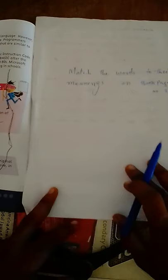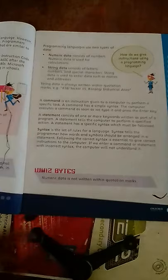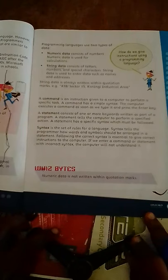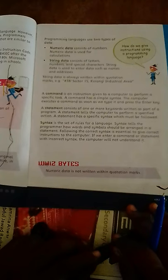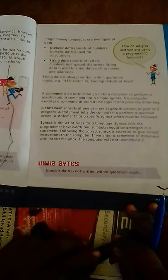Dear students, this is all about the data types. The data types are in your book. In your book, there are two types of data: number one is numeric data, and number two is string data. We have discussed both types of data and we will meet in the next lecture. Allah Hafiz. Assalamu Alaikum, dear students. Thank you very much.